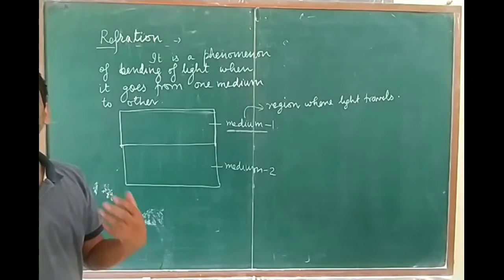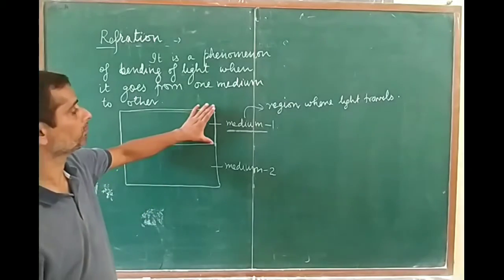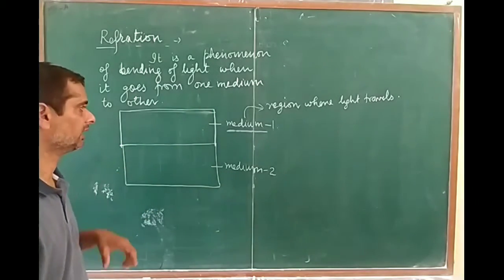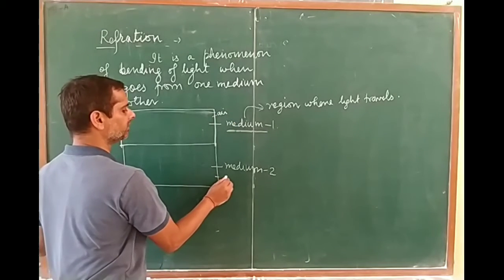A medium is a region where light travels. Here I have two mediums: this is medium 1 and this is medium 2. Let this medium be air and this medium be glass.